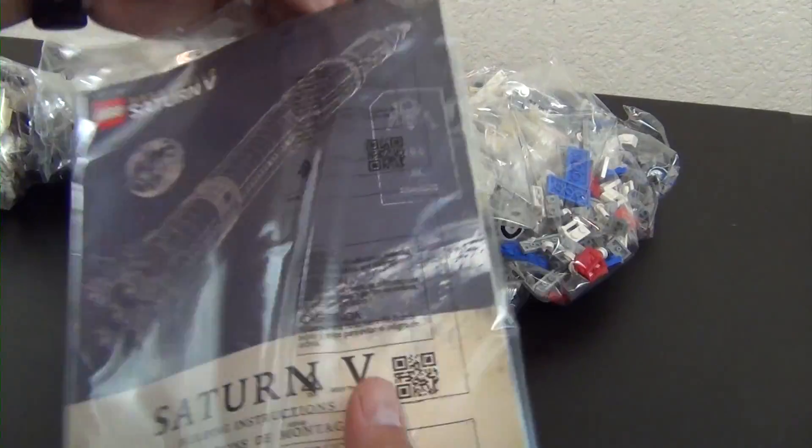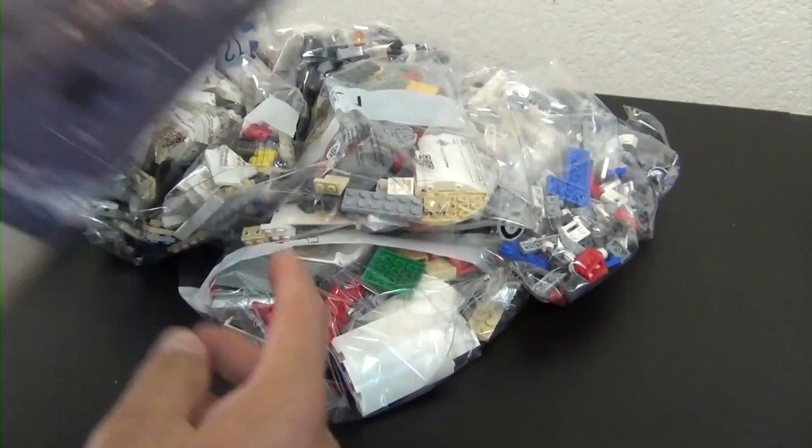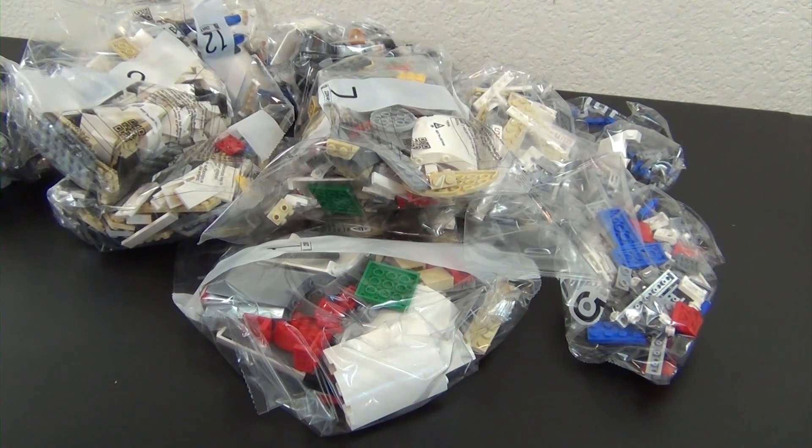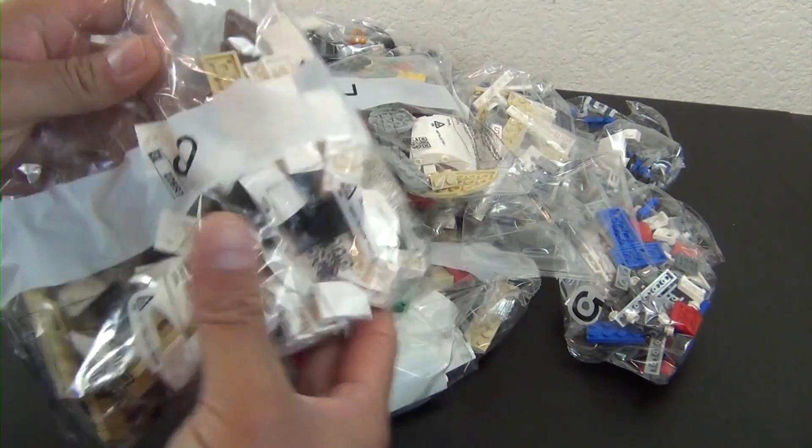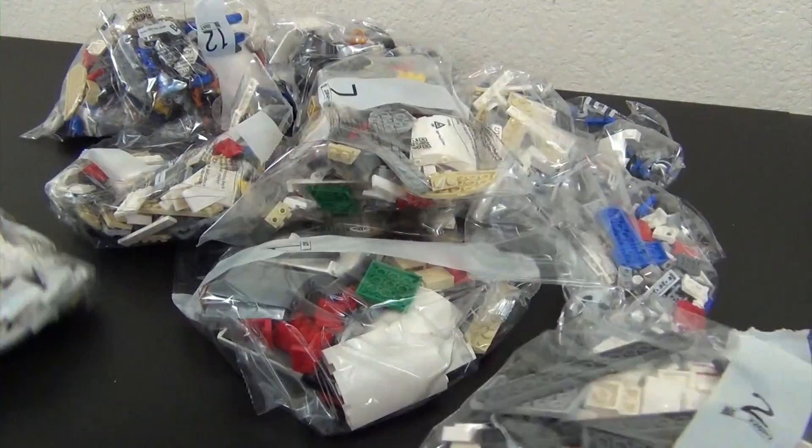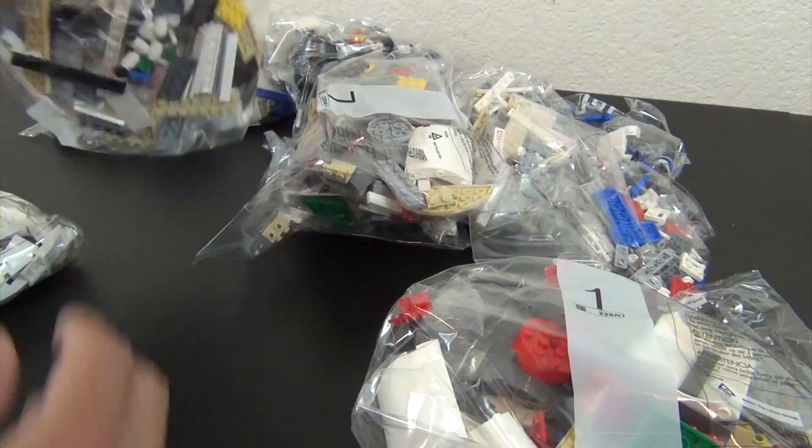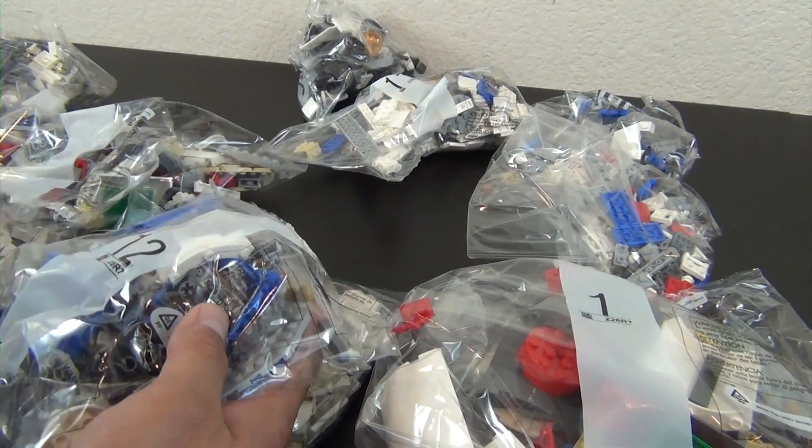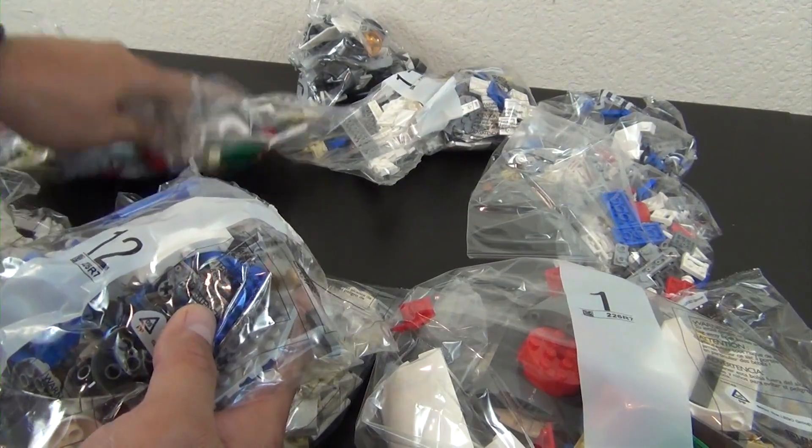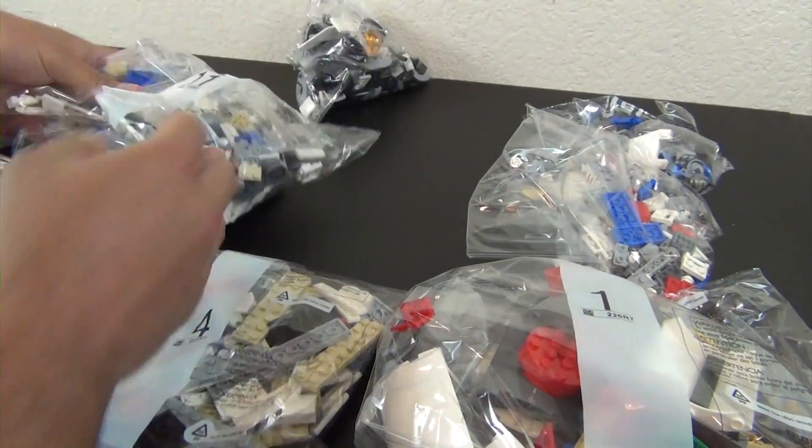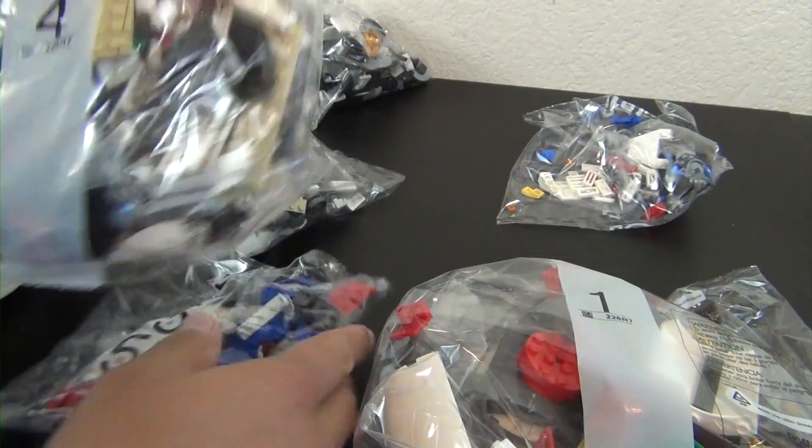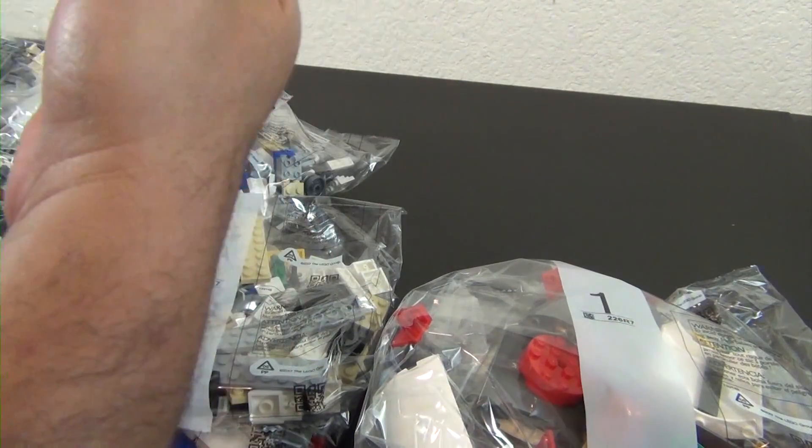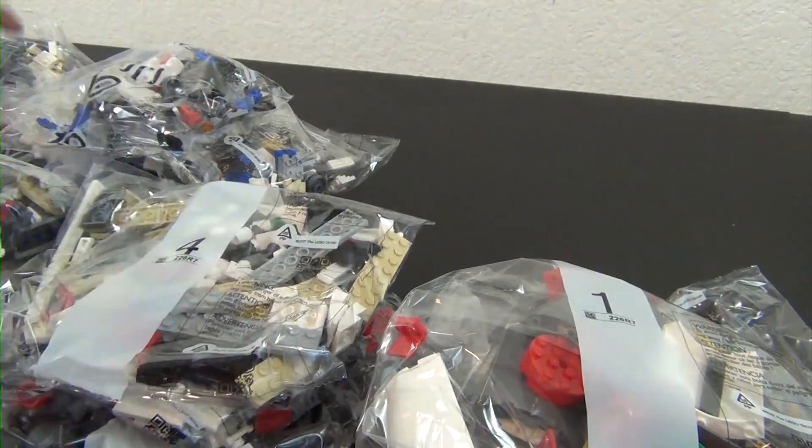All right, so there's all of our parts. We have a big book that is in its own little bag. There's no sticker sheets that I can see. The good thing about this is it looks like they broke it up into quite a few numbered bags so we can break the build up pretty easily. Let's see what we got here: seven, five, four, there's a ten, six, and three.